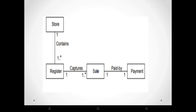Here is an example of association with different classes: Store, Register, Sale, and Payment. Every association name starts with an uppercase letter — 'Contain' starts with C, 'Capture' starts with C, and 'Paid-By' uses the hyphen format. The default direction to read the association is top to bottom or left to right: Store contains Register, Register captures Sale, Sale paid by Payment.